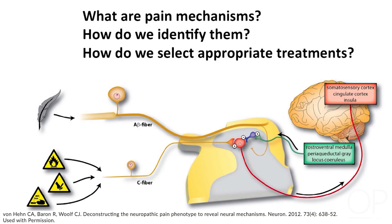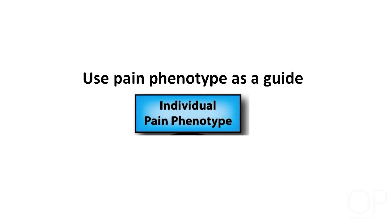How do we as clinicians potentially identify mechanisms in our patients? The argument I would like to present is that the best way we can do this at the moment is to use the pain phenotype — those combinations of signs and symptoms, those constellations of features that our patients have — as a guide to what the major underlying neurobiological processes are that are generating their pain.